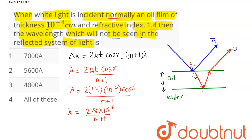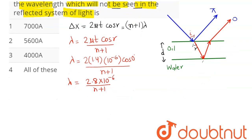For different values of n, for n equals 3, this value comes out to be 2.8 × 10^-6 divided by 4, which comes to 0.7 × 10^-6, which is 7000 angstrom, that is option number 1.